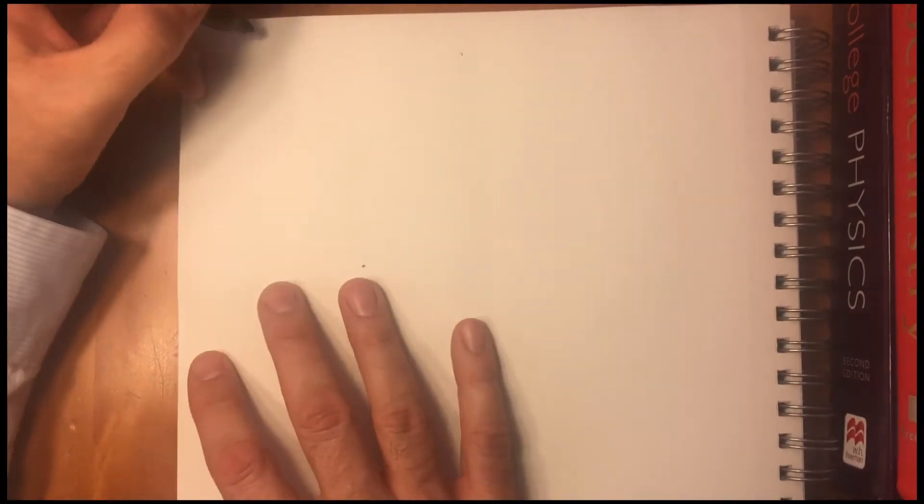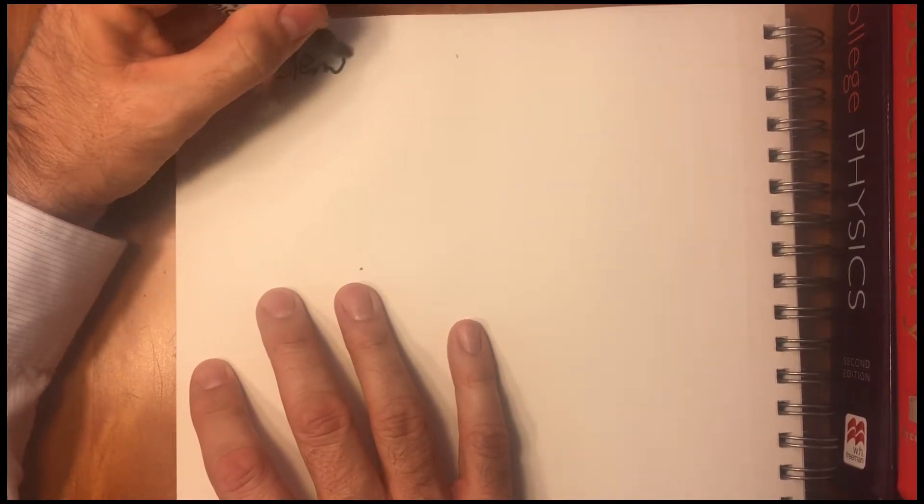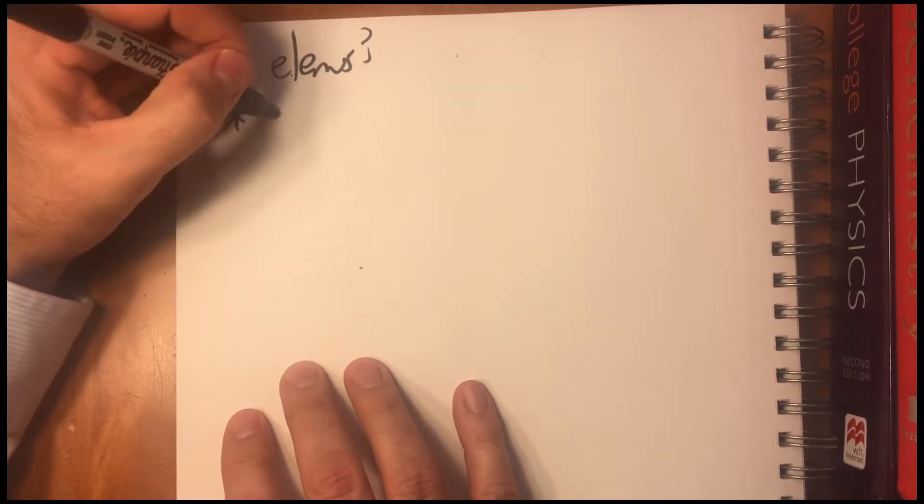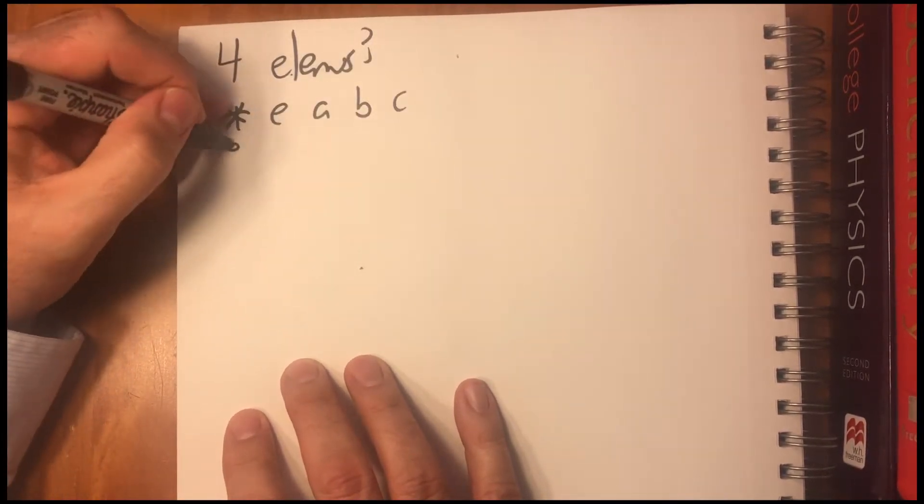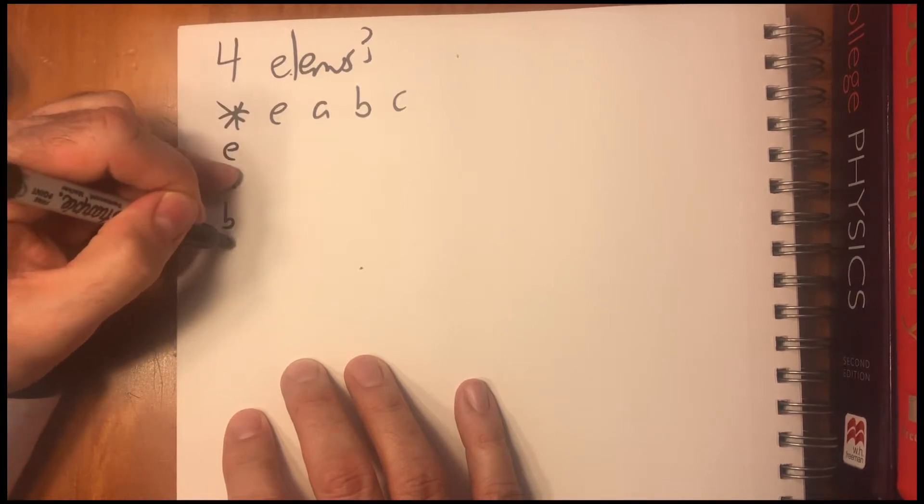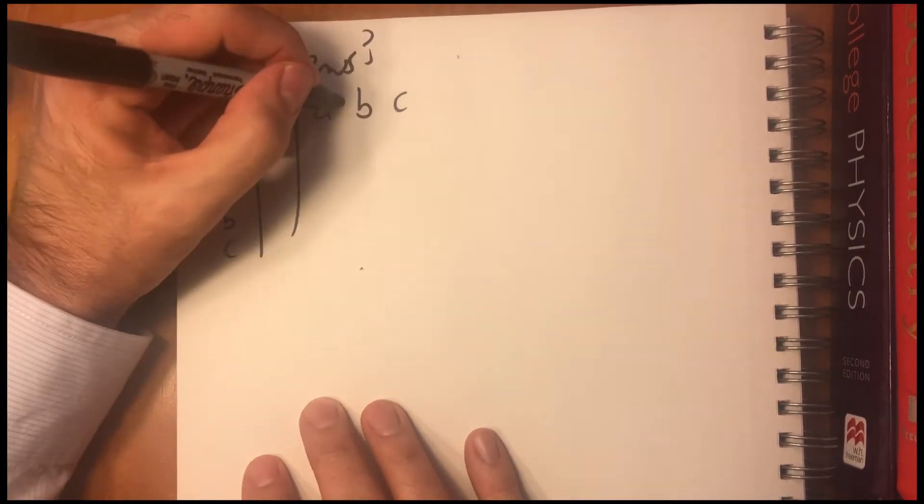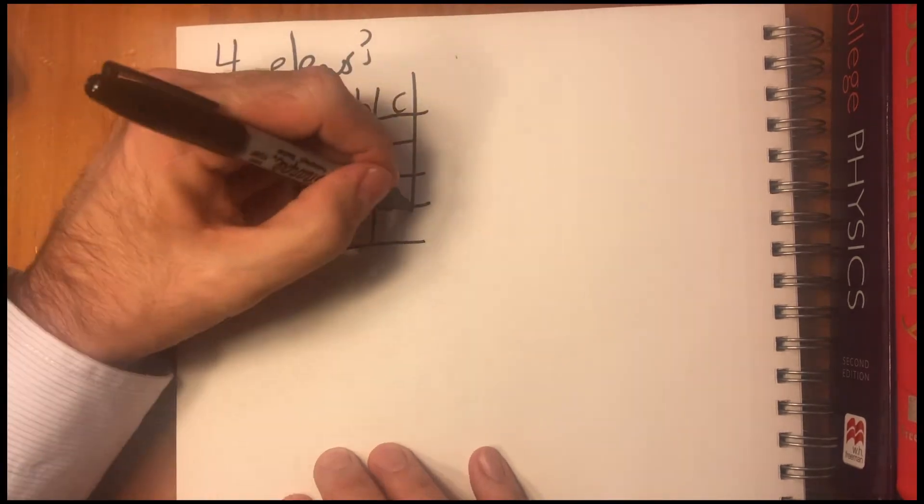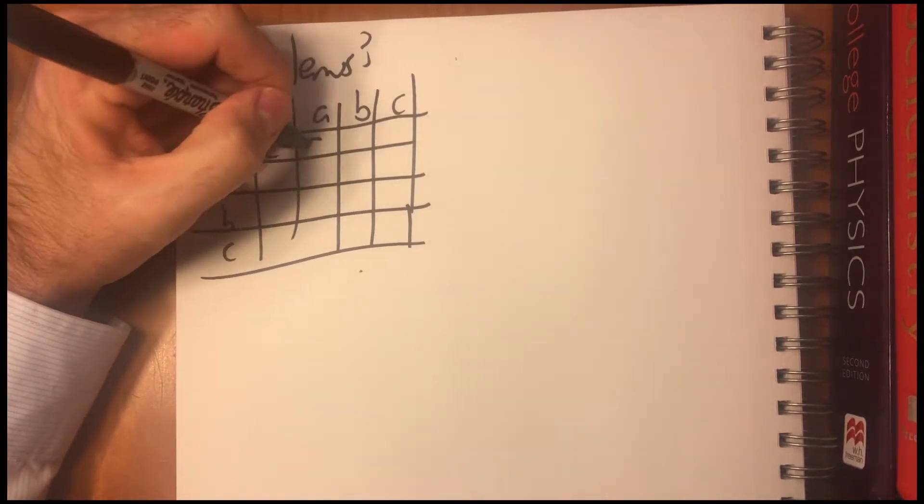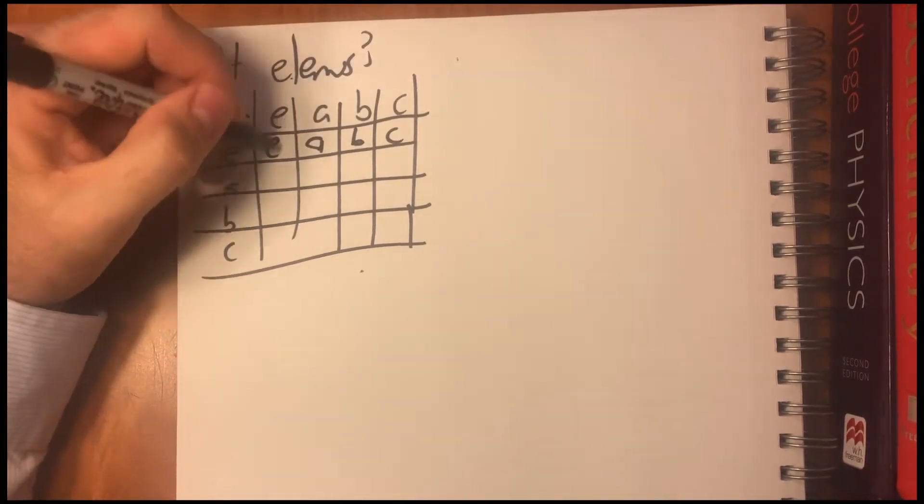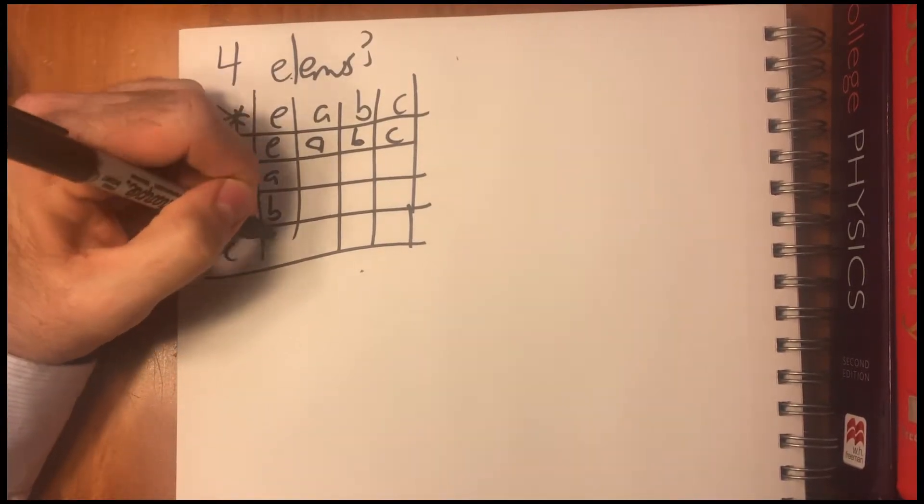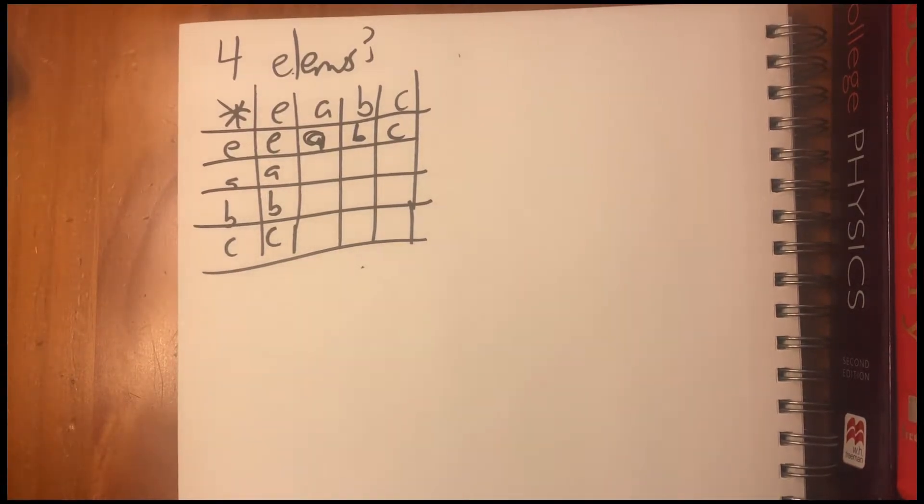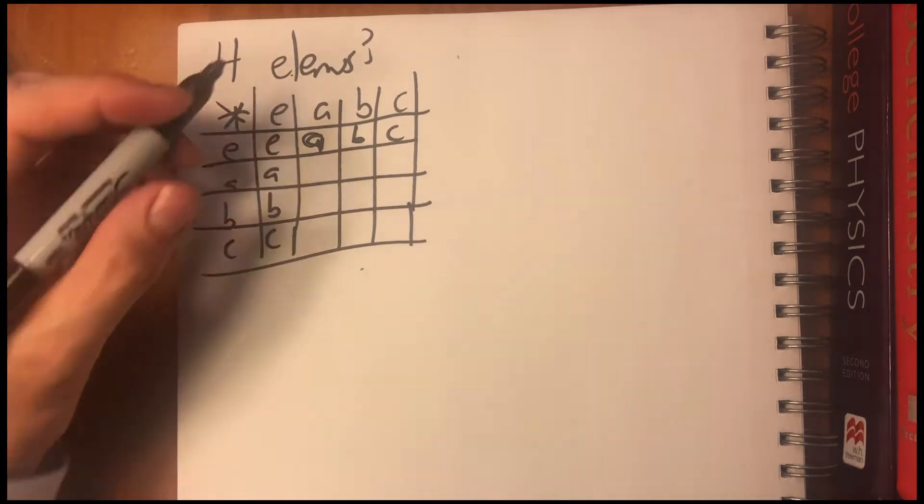So now I'm just going to do a couple more. What about four elements? It starts getting more interesting here. So we have E, A, B, C. E, A, B, C. Always start with multiplied by the identity.